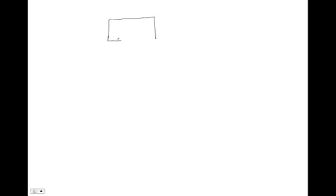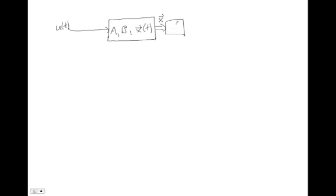We start with our plant, which we've been writing with our state space equation. It has an A matrix, a B matrix, and a state vector at each instant in time that describes it. We provide an input U — a signal varying in time — and out of that plant comes our state vector. We pass that state vector through a C matrix, and out comes our output Y, the signal we want to control. This whole thing is our plant.